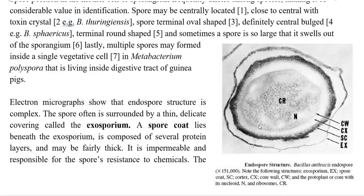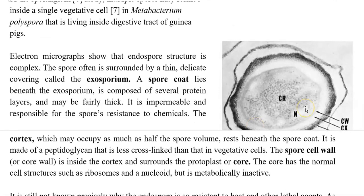Electron micrographic studies show that the endospore structure is complex. It is often surrounded by a thin, delicate covering called the exosporium. A spore coat lies beneath the exosporium, composed of several protein layers making it fairly thick. It is impermeable and responsible for the spore's resistance to chemicals, radiation, etc. The subsequent region is the cortex, which may occupy as much as half the spore's volume and rests beneath the spore coat. It is made up of peptidoglycan that is less cross-linked compared to that of vegetative cells. The spore cell wall, also referred to as the core wall, is inside the cortex and exactly surrounds the protoplast or core, which constitutes the nucleoid as well as the ribosomes.